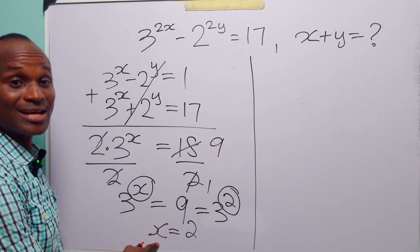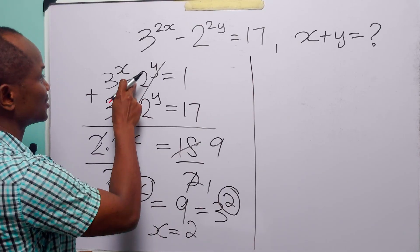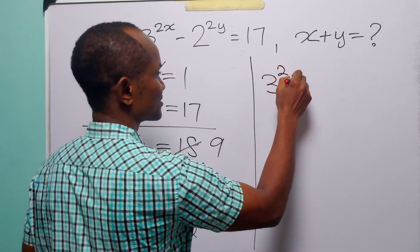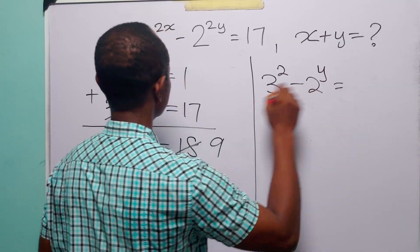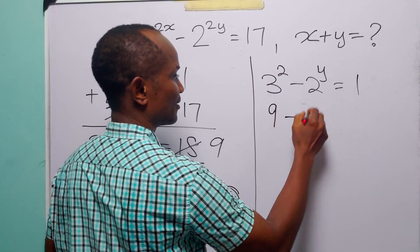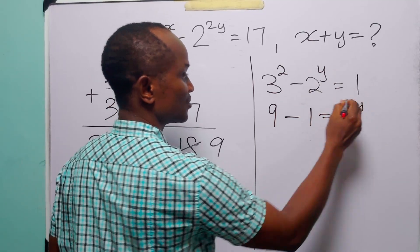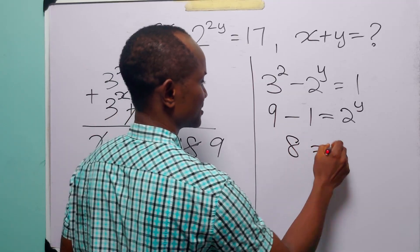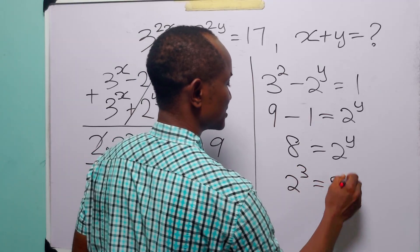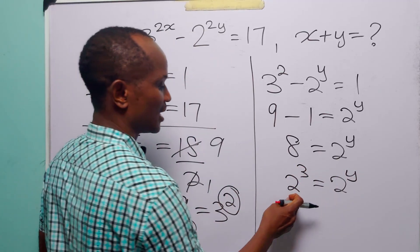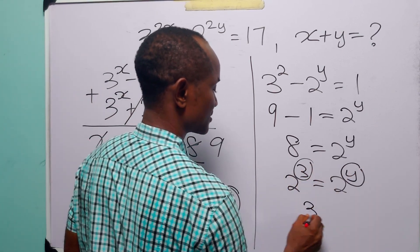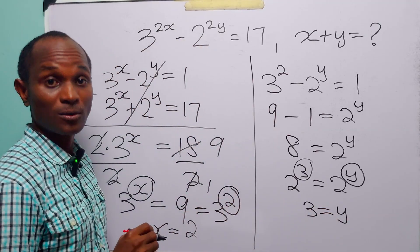Having found x equals 2, we substitute it into the first equation to find y. We have 3 squared minus 2 to the power y equals 1. Rearranging: 9 minus 1 equals 2 to the power y, so 8 equals 2 to the power y. Since 8 is 2 cubed, equating the exponents gives us y equals 3.